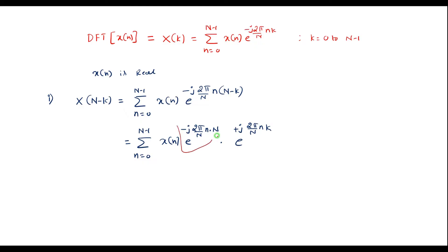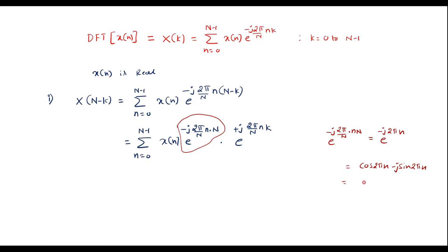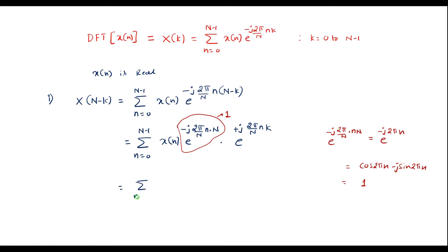Now, the term e to the power minus j 2 pi by N into n N equals e to the power minus j 2 pi n, which is nothing but cos(2 pi n) minus j sin(2 pi n). Since cos(2 pi n) is always equal to 1 and sin(2 pi n) is always equal to 0, the value of this entire term is 1. Therefore, I can represent X of N minus k as summation n equals 0 to N minus 1 of x of n times e to the power plus j 2 pi by N into n k.